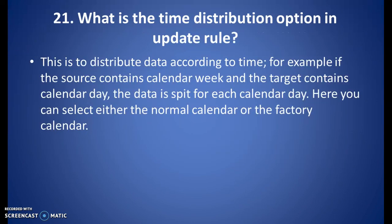What is the time distribution option in update rule? This is to distribute data according to time. For example, if the source contains calendar week and the target contains calendar day, the data is split for each calendar day. You can select either the normal calendar or the factory calendar.